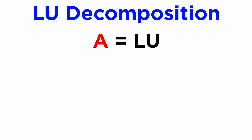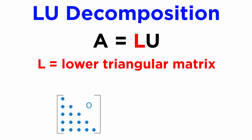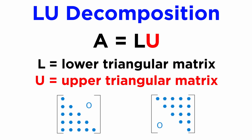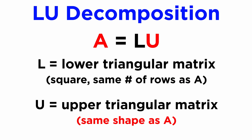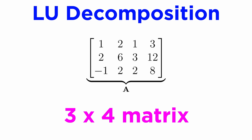The LU decomposition expresses a given matrix A as a product of a lower triangular matrix L and an upper triangular matrix U. These are matrices where their only entries lie below or above the leading diagonal respectively, and every other entry is zero, such as shown here. L will always be a square matrix with the same number of rows as A, and U will always be the same shape as A. Let's see how to compute the LU decomposition, sometimes also known as the LU factorization, of this 3x4 matrix A.